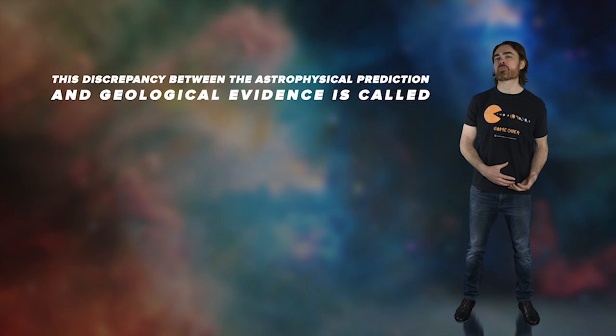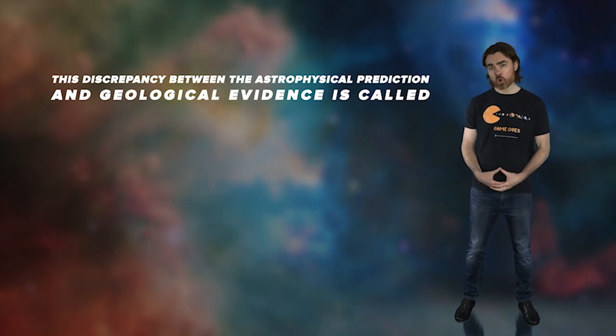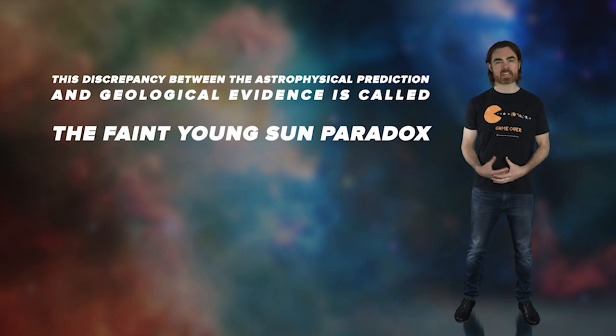This discrepancy between the astrophysical prediction and the geological evidence is called the faint young sun paradox and was pointed out by Carl Sagan and George Mullen in the early 70s. But planet surface temperature and the location of the habitable zone depends on the planet's atmosphere as well as the star's brightness. If the early Earth had a much stronger greenhouse effect due to high carbon dioxide or methane content, then the increased heat retention may have compensated for the fainter sun. There are a few plausible scenarios that give the right levels of greenhouse gases. However, there's not yet a consensus on the exact solution to this paradox.